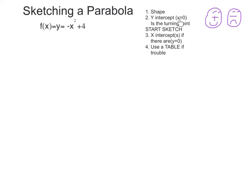First you do the shape, then you do the y-intercept, you make x naught, that is your turning point. Then you start your sketch, then you work your x-intercepts if there are any. Then you use a table in all graphs if there's trouble. That's the last resort.